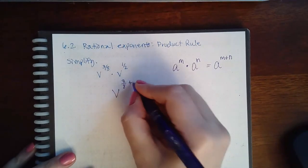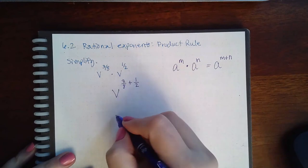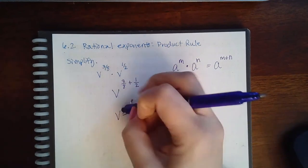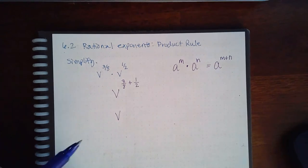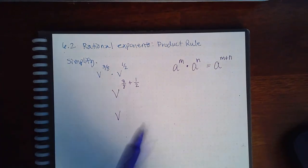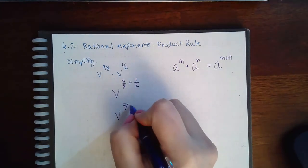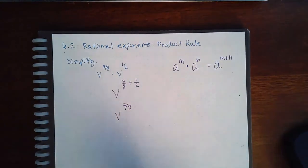I can take this exponent and add this exponent. I'm not sure what that will be, let's see in the calculator. 3 over 8 plus 1 over 2, I get 7 over 8. Now it's not asking me to write it in radical form or anything like that.